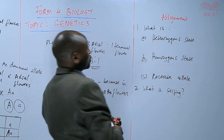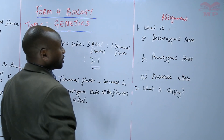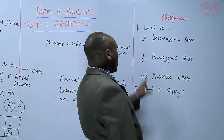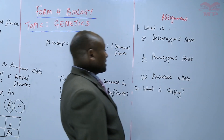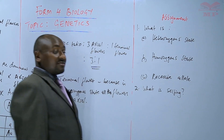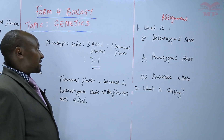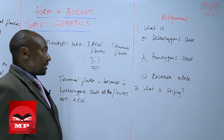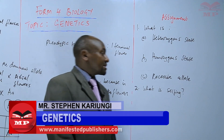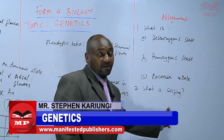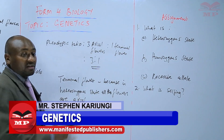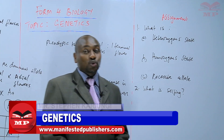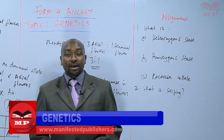We'll have an assignment based on what we have discussed. Question one: what is heterozygous state? Question two: what is homozygous state? Question three: what is a recessive allele? And question four: what is selfing? Answer those questions based on what we have already discussed. We'll stop there until next time — goodbye!